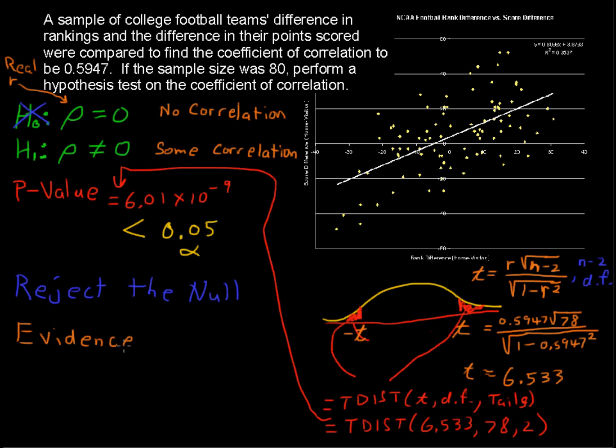And that does make sense, because you look at this cloud. It's not just some random cloud. There's a trend. There's a definite trend there to those dots, the scatter plot. So evidence suggests there is some correlation.